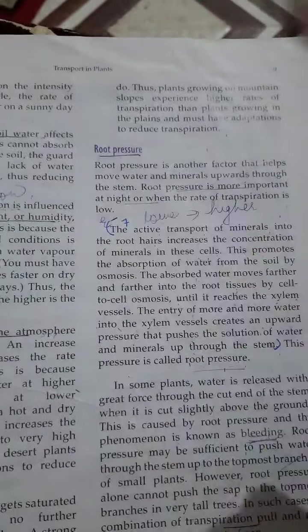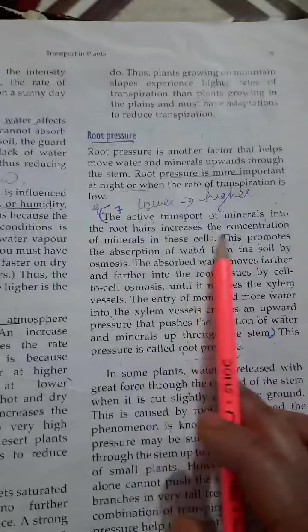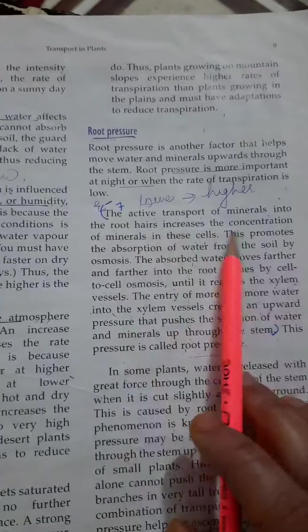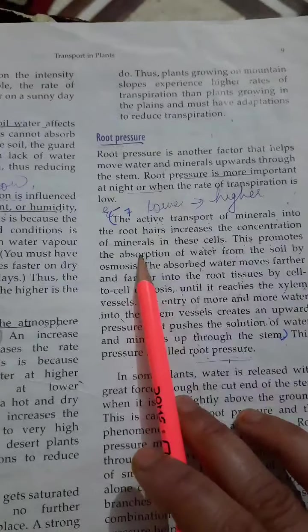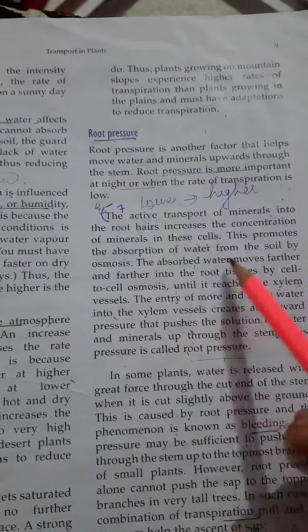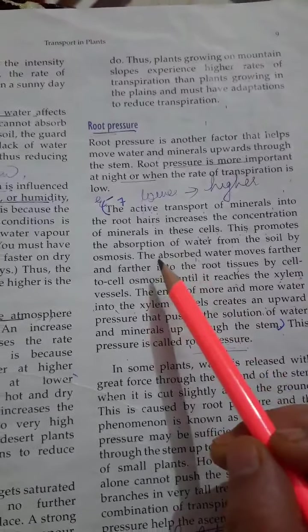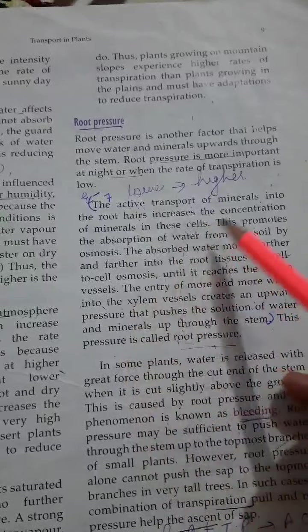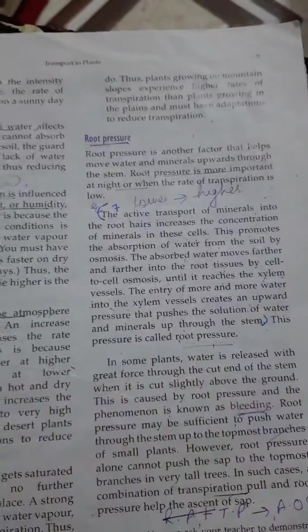Root pressure: the active transport of minerals into the root increases the concentration of minerals in the cell. So this promotes the absorption of water from the soil. The absorbed water moves farther and farther into the root tissue by cell to cell osmosis.